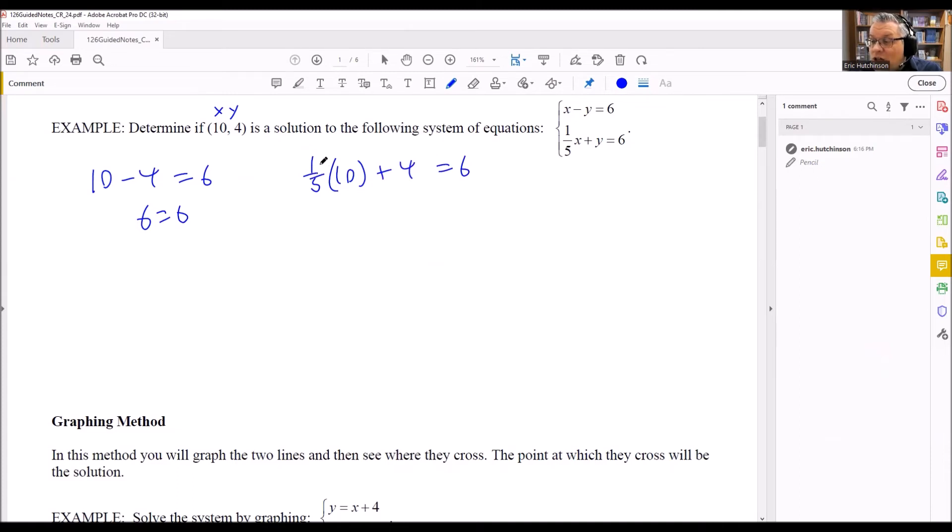One-fifth of 10, 10 divided by 5 is 2. And yes, I do get the same thing on both sides.